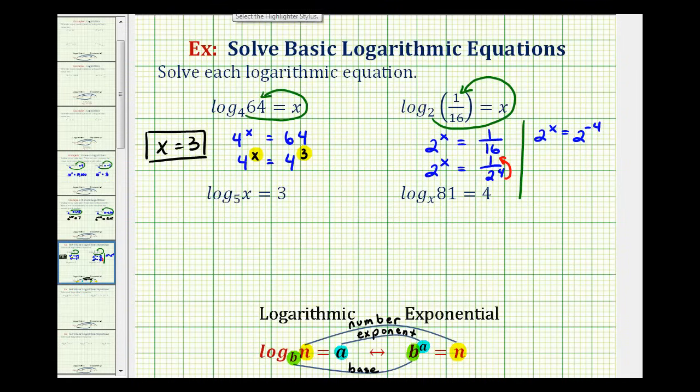So we'd have 2 to the x equals 2 raised to the power of negative 4. And now that the bases are the same and these two expressions are equal, we know x must equal negative 4.